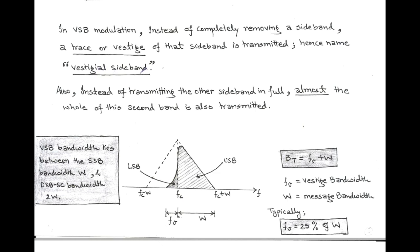The LSB is limited between Fc minus W to Fc, and the bandwidth of the vestige is denoted by Fv, called the vestige bandwidth. Typically, we take the vestige bandwidth as 25% of message bandwidth W. Instead of transmitting the upper sideband in full, we transmit almost the whole of it, so that the vestige part of the lower sideband compensates the upper sideband such that there is no information lost.